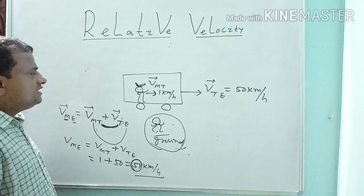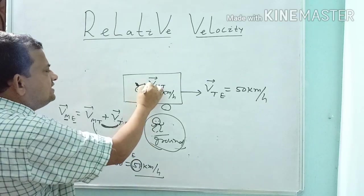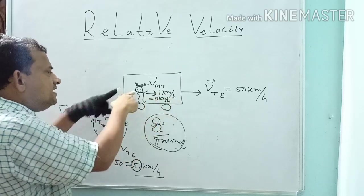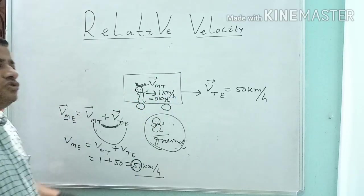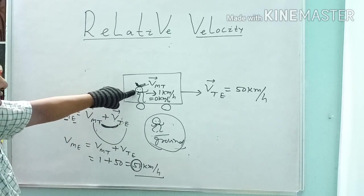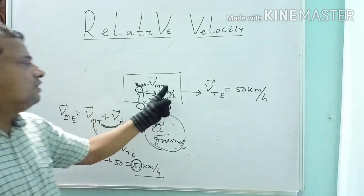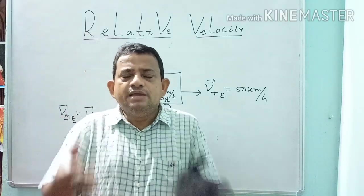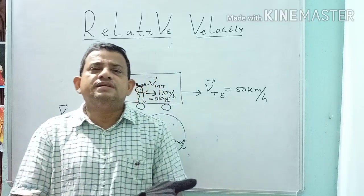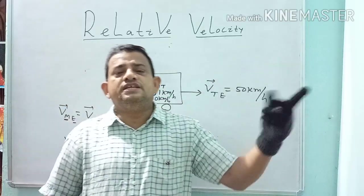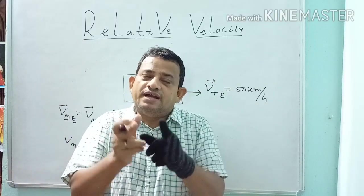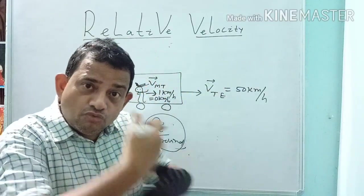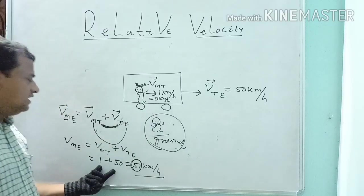Suppose someone says the person is at rest — 0 km/h. If he is at rest inside the train, what is his velocity with respect to the ground? Obviously it is the velocity of the train. If train speed is 50, your speed is 50. If train speed is 20, your speed is 20 — provided you are at rest inside the train. But if you move, the velocity is calculated as shown.